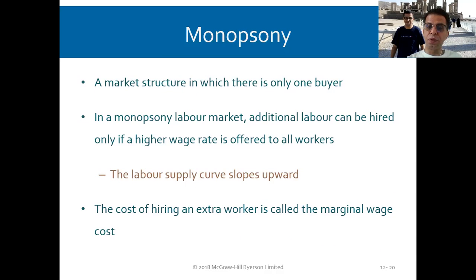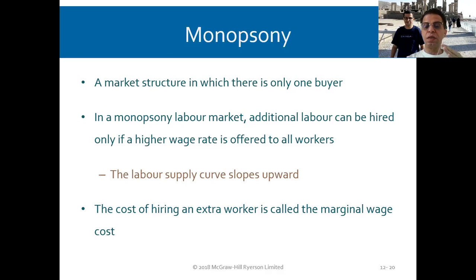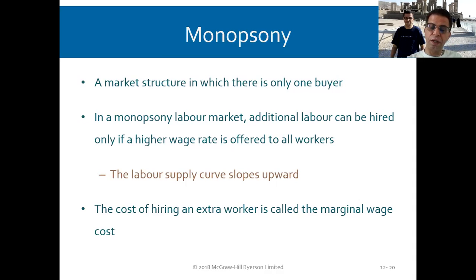In monopsony — a market structure in which there is only one buyer — compared to monopoly which has only one seller, here there is only one buyer. In a monopsony labor market, additional labor can be hired only if a higher wage rate is offered to all workers. The labor supply curve slopes upward, and the cost of hiring an extra worker is called the marginal wage cost.